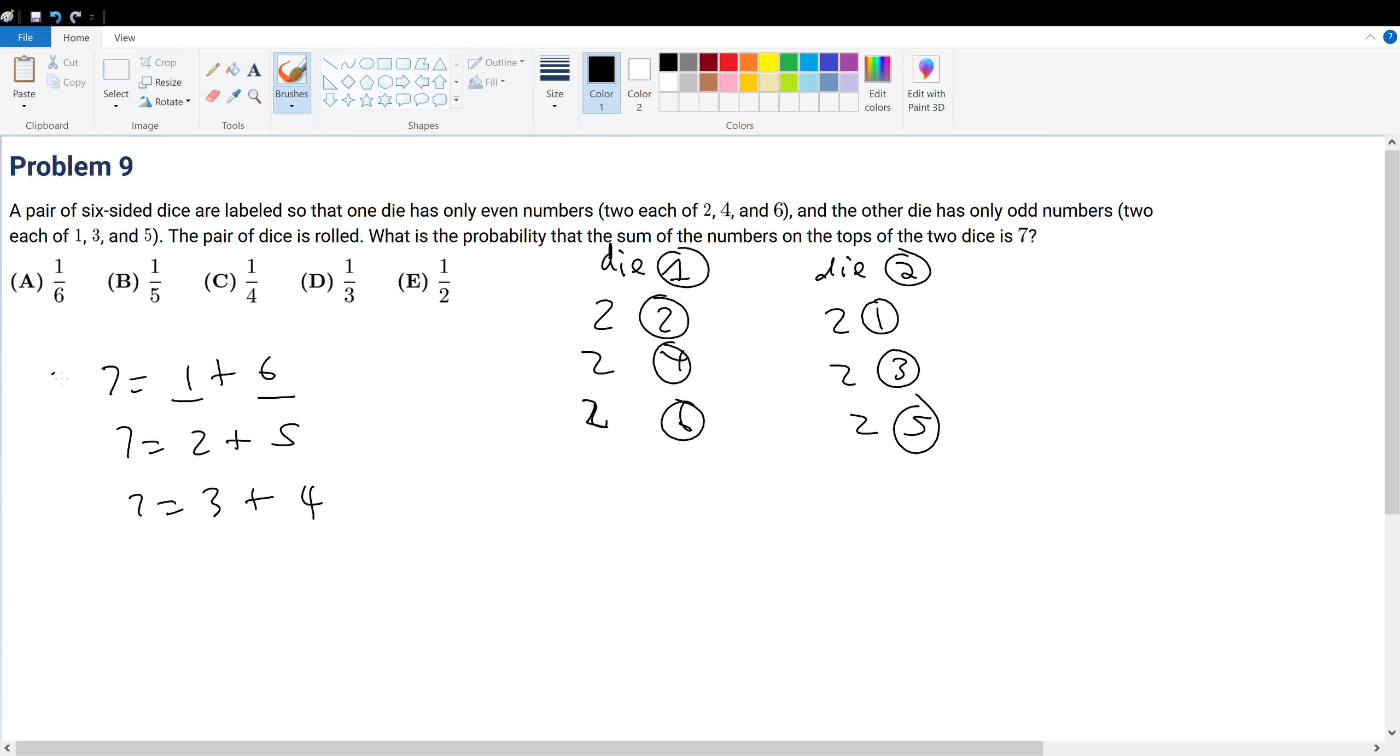Let's consider case 1 when it's going to be 1 plus 6. What is the probability of rolling the 1 on die number two? Because die number two contains all the odd numbers. Well, obviously we have two winners over six total, so 2/6. And in probability, 'and' means multiply. And a 6 on the other, which is 2/6, which is 1/9.